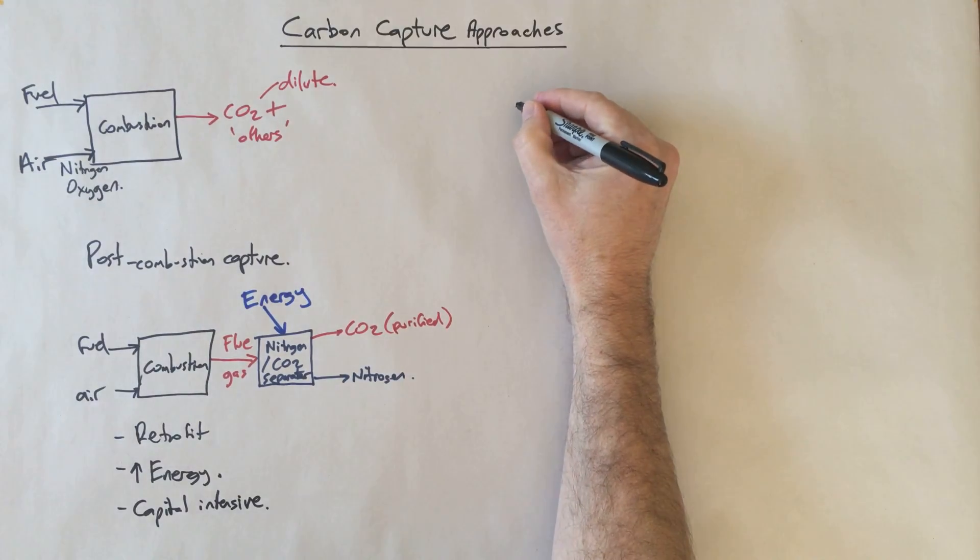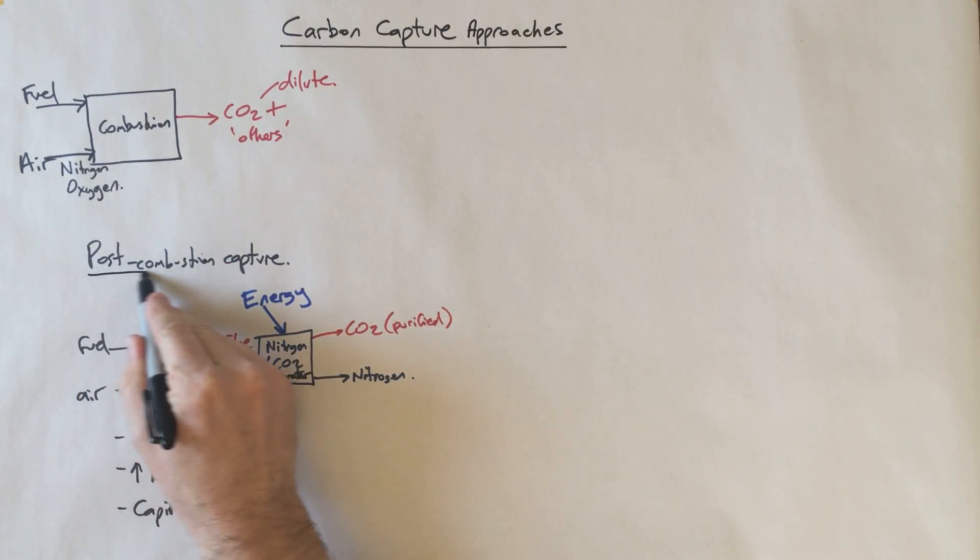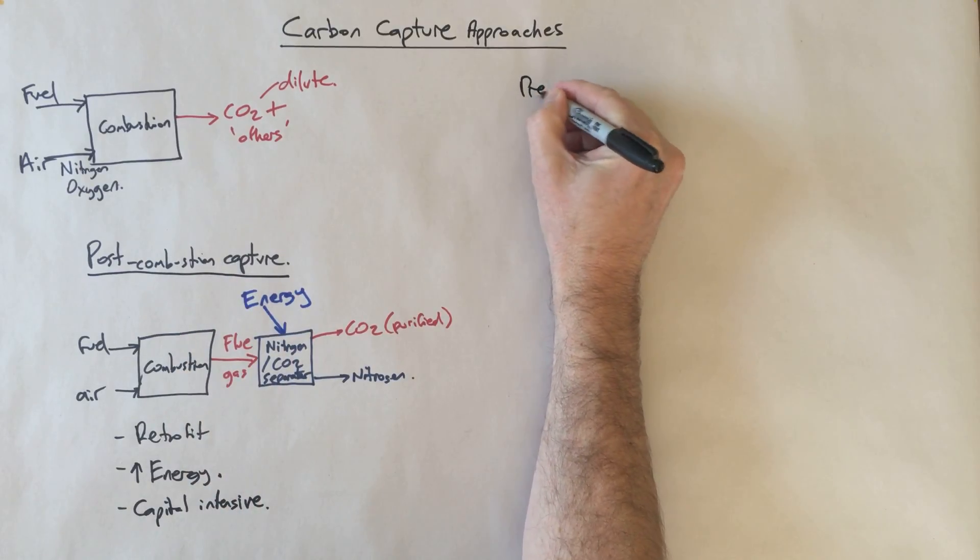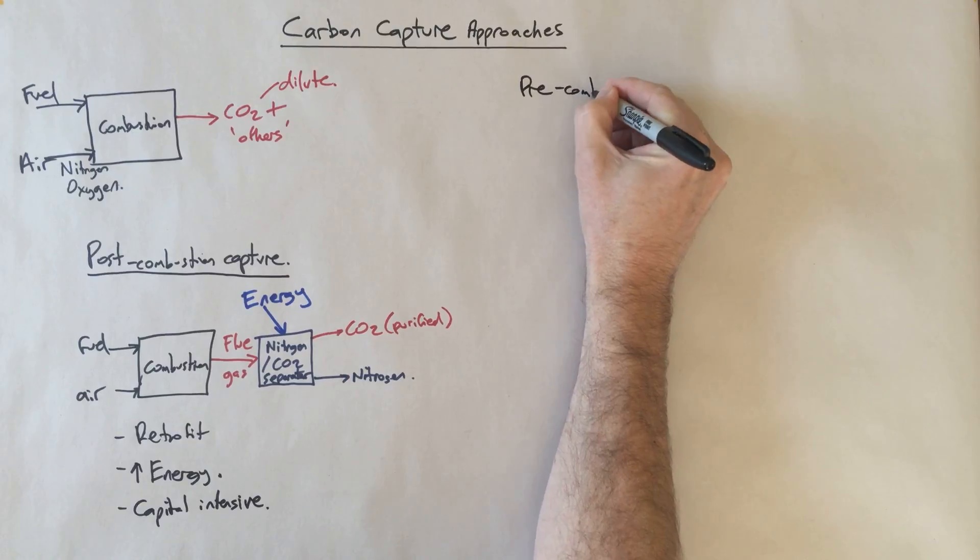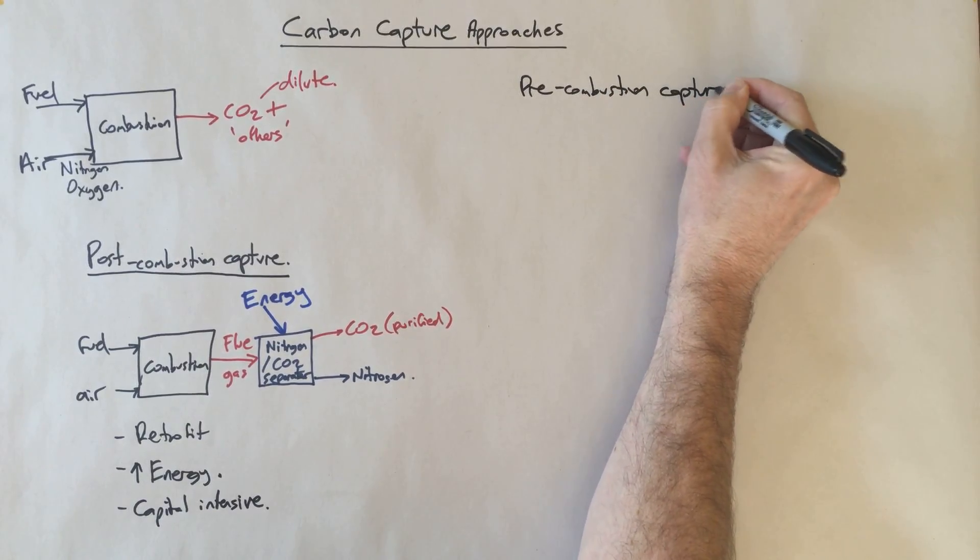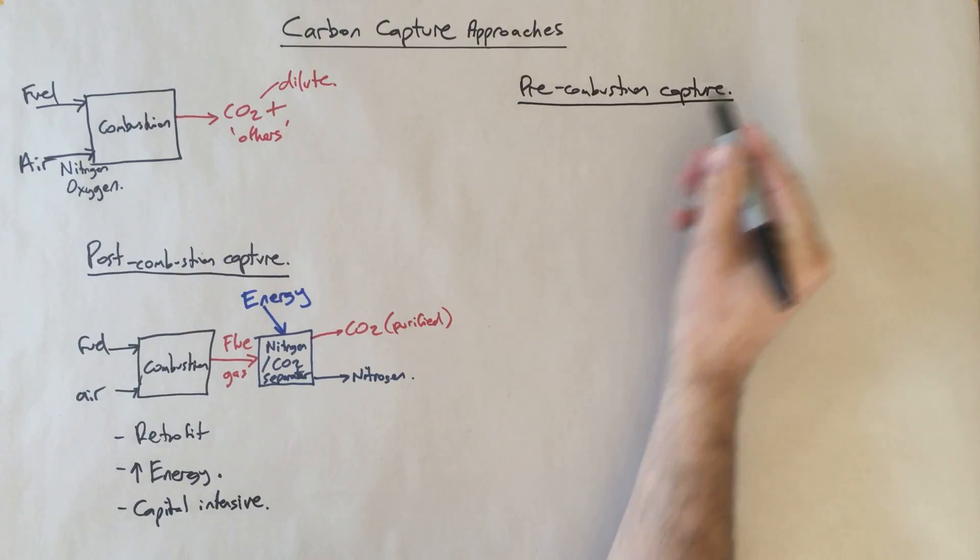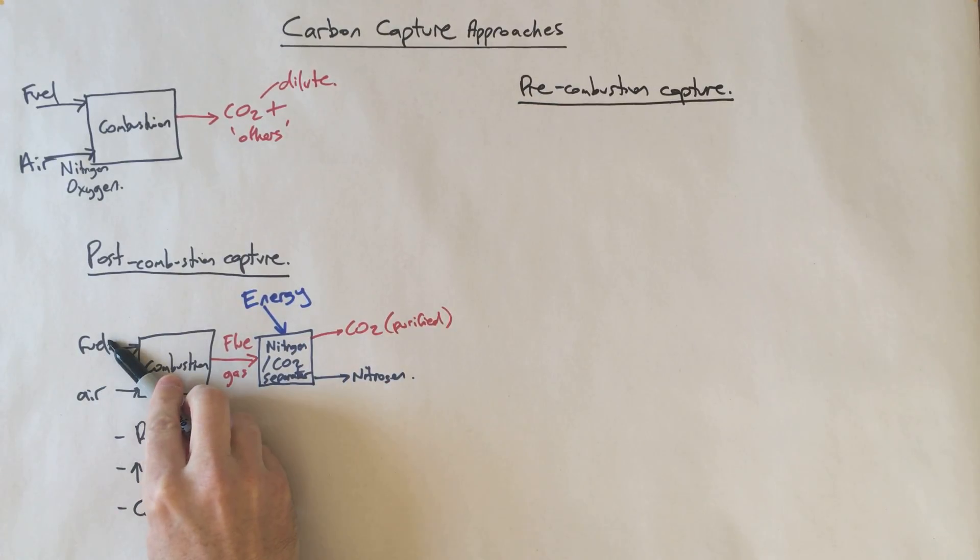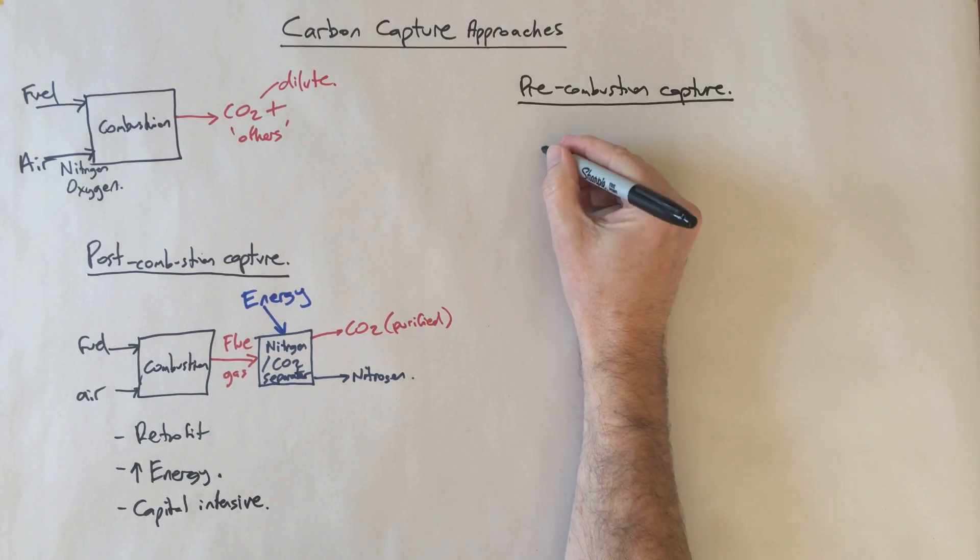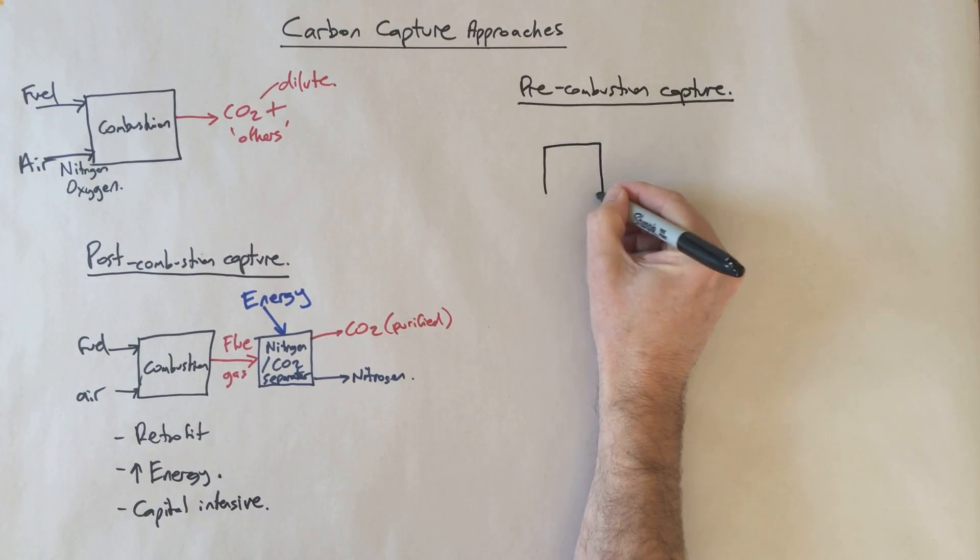The second approach is, as this post-combustion capture title would suggest, something else known as pre-combustion capture. Pre-combustion capture is basically saying, instead of allowing our carbon in our fuel and all of this nitrogen in the air to get together, what we will do is we'll actually take the carbon out of the fuel before we combust it.